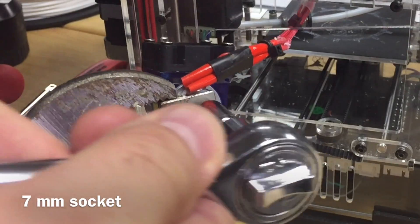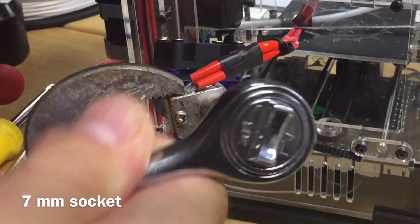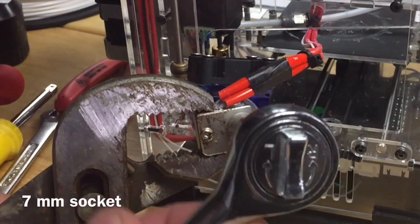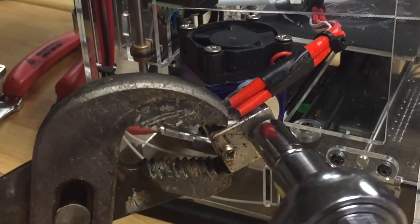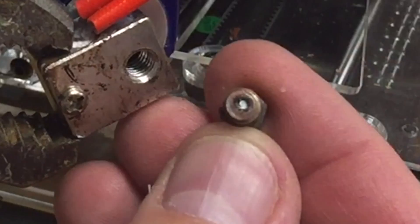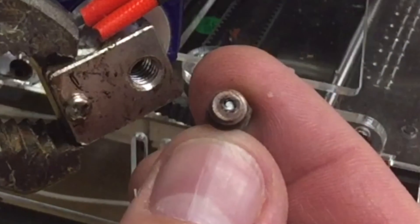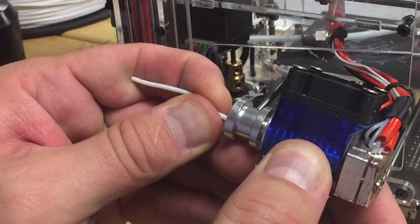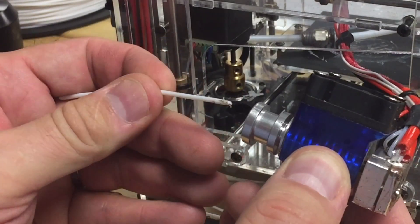I used channel locks to hold the bottom of the hot end and then a 7 millimeter socket to remove the nozzle. Normally this comes off really easy, but this one was really tight plus I was fighting the filament that was still connected. Once I got it out you could see the filament stuck inside and also filament inside the rest of the hot end. That just came out by pulling the rest of the filament that I had cut away.